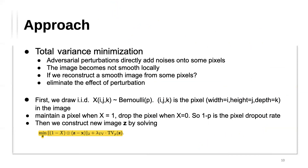The next transformation is total variance minimization. Since adversarial perturbations directly add noise onto some pixels, the image becomes non-smooth locally. If we can reconstruct a smooth image from some pixels, we can eliminate the perturbation effect. Smoothness is defined by the difference between adjacent pixel values — from the pixel values there is a visible jump even if the human eye cannot see it.